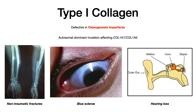That picture of the blue sclera is the highest yield picture probably in today's video because test writers love to put it in questions about type 1 collagen. What's happening is that because you have a defect in type 1 collagen, you're getting translucency of the connective tissue that lies over the choroid, and because it's translucent, you actually see the blue sclera. The last symptom is deafness because the bones that make up the middle ear require type 1 collagen. If you have a mutation in the COL1A1 or COL1A2 gene, you can't adequately perform the function of those middle ear bones, resulting in deafness. These three symptoms — non-traumatic fractures, blue sclera, and deafness — are what you need to know for osteogenesis imperfecta.